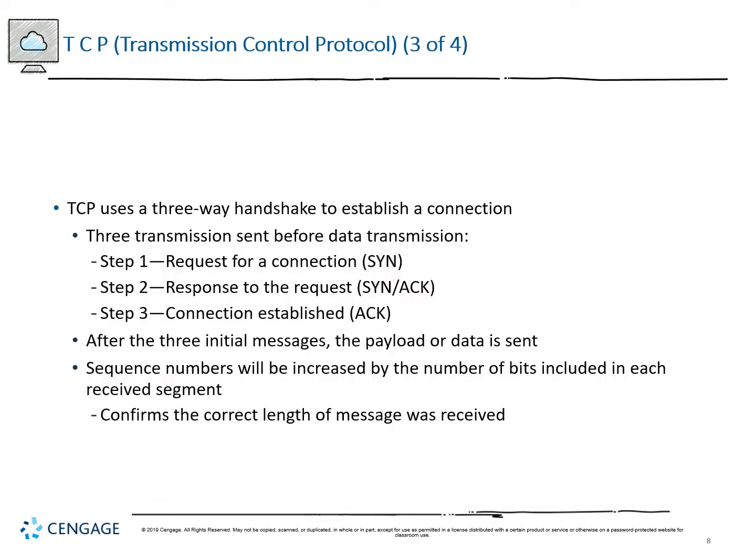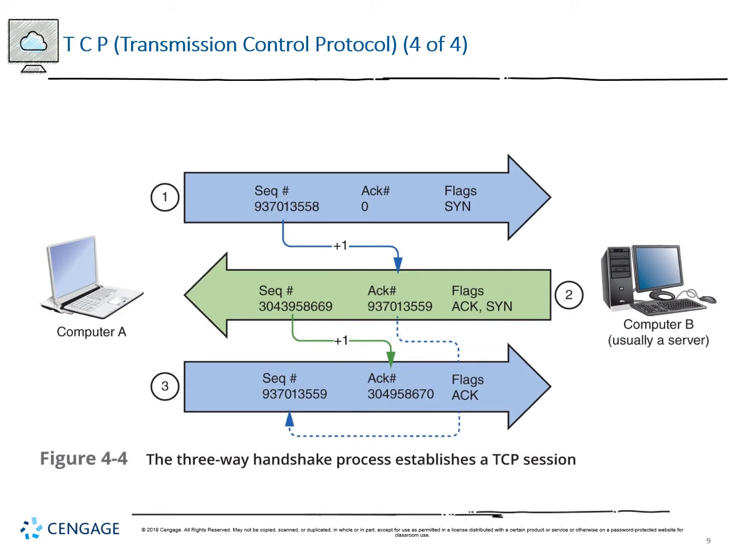The three-way handshake to establish a connection works as follows. Step one is the request for a connection — the synchronization packet. Step two is synchronization/acknowledgement: the response from the destination saying it's ready. Step three is the acknowledgement, or ACK. After these three messages are processed, the actual application data can be sent. Sequence numbers increase by the number of bits included in each segment — for example, if we send 2048 bits, the next sequence number will be 2048.